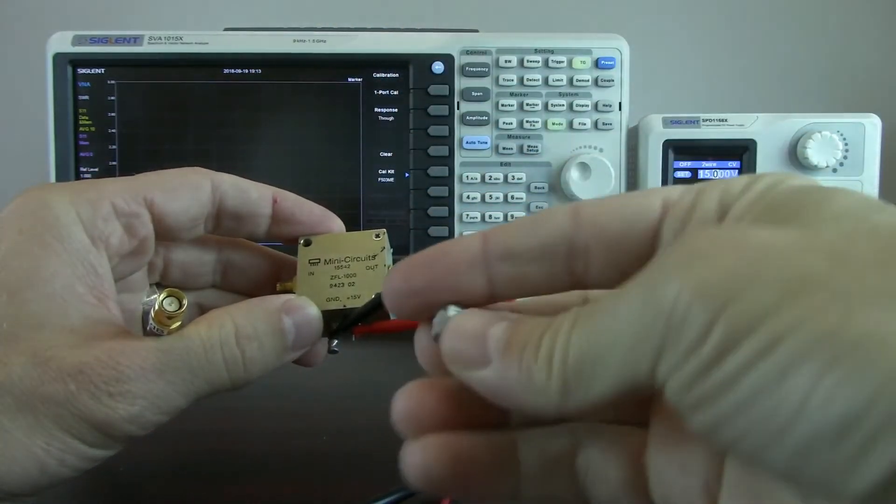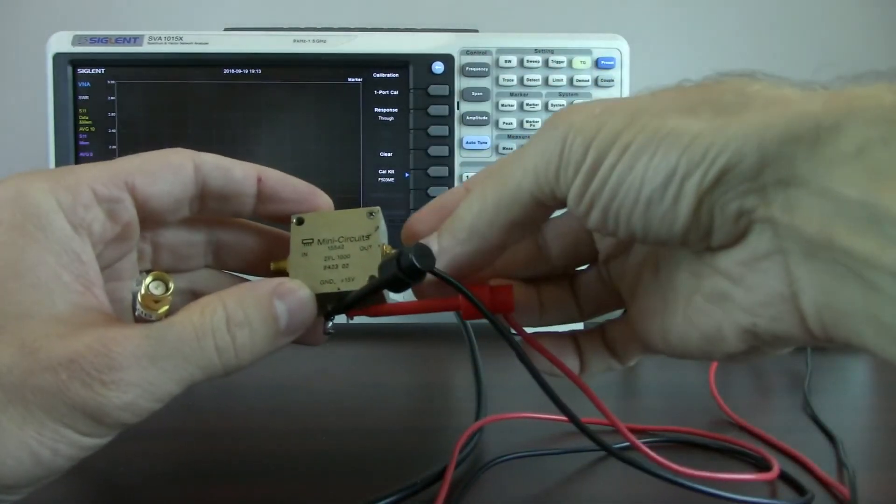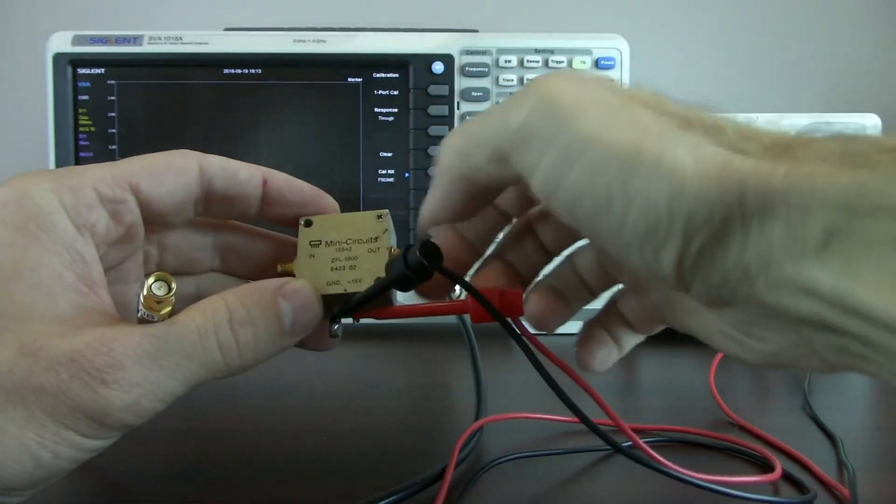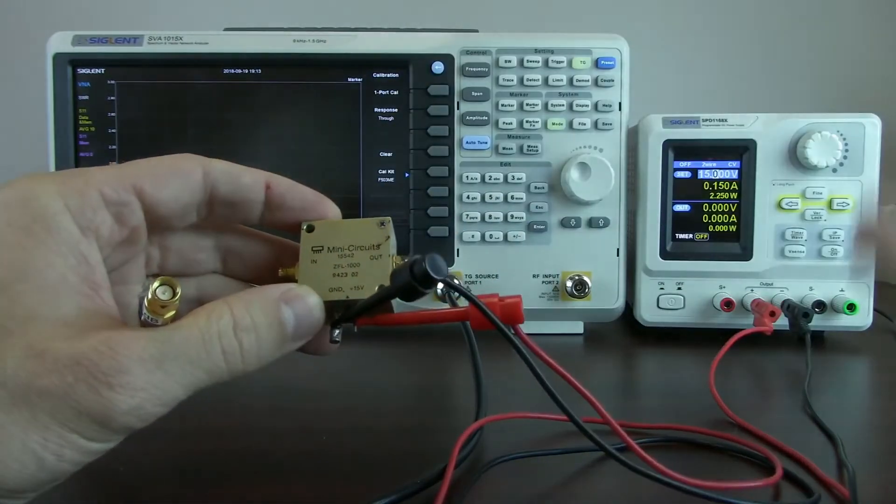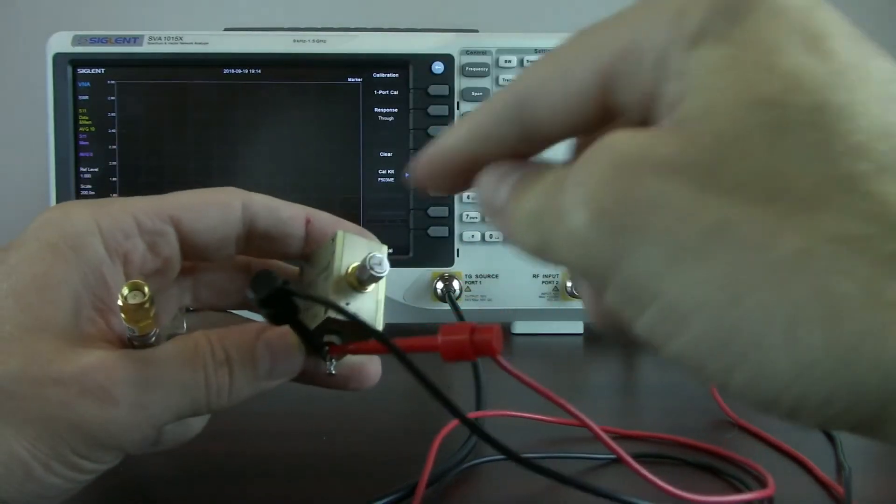I'm going to connect up our positive and negative lead. And because I have an open port, I'm going to be doing a reflection measurement. I actually want to put a load termination on the output or the opposite side of the port so that I get a proper measurement, so that it looks as if this is connected to a 50 ohm load.